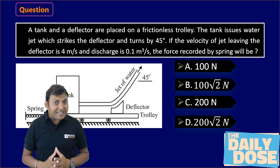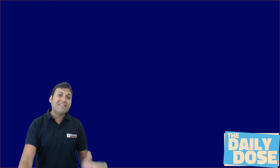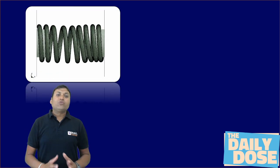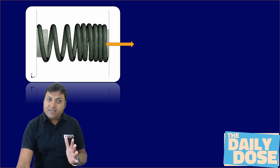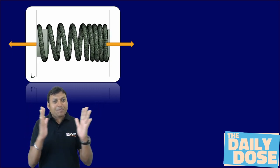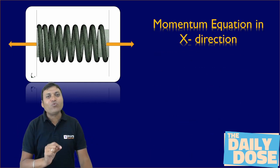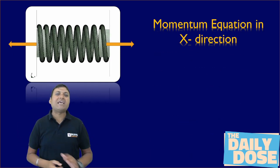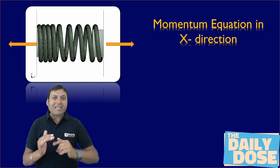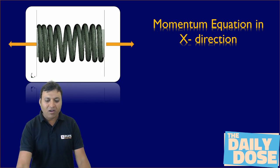The spring is connected to the trolley, and the trolley carries both the tank and the deflector. The spring can either elongate or compress, so it can only experience force acting in the horizontal or x-direction. That is why we apply the momentum equation for the fluid only in the x-direction, because the force developed in the y-direction will not be recorded by the spring at all.